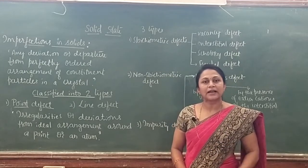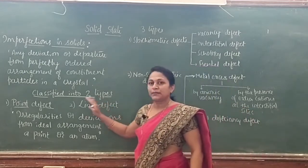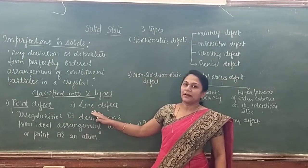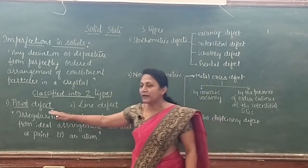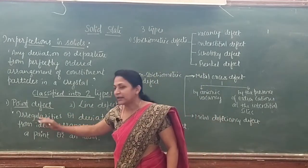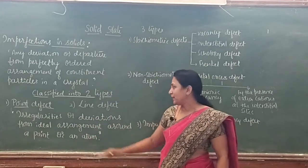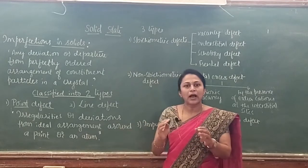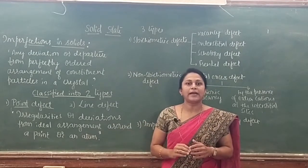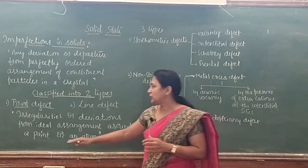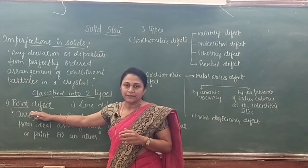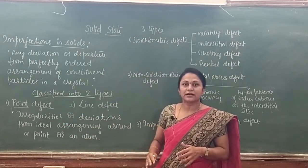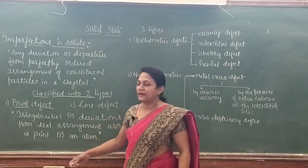These defects are classified into two types: point defect and line defect. Point defect means it is the irregularity or the deviation from ideal arrangement around a point or an atom. In this unit, we have focused our study only on the point defects.